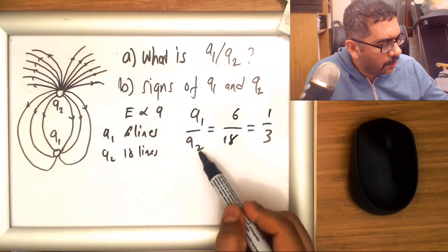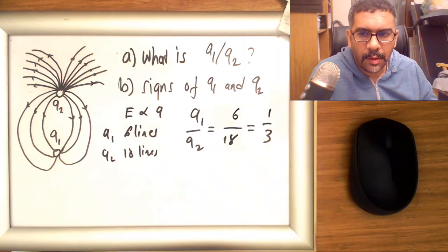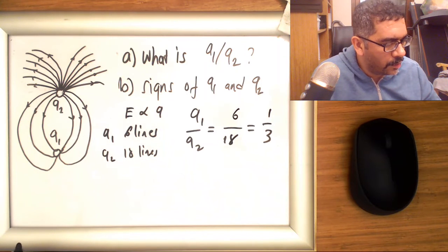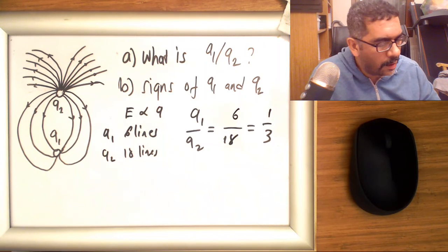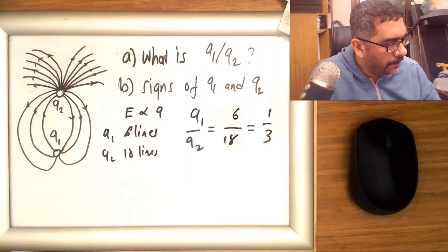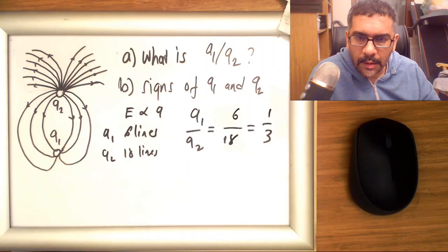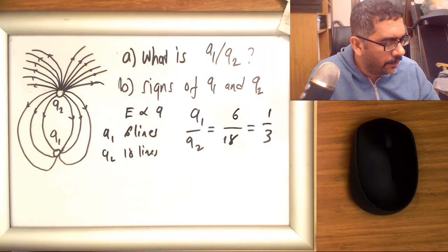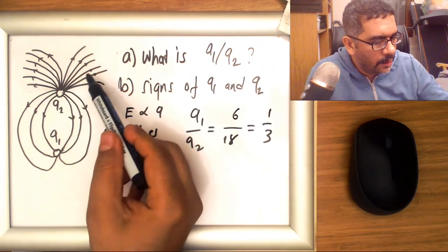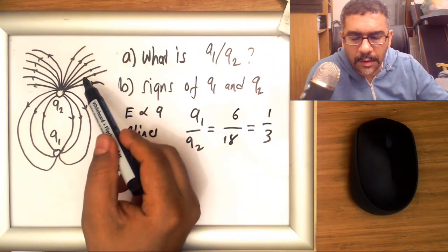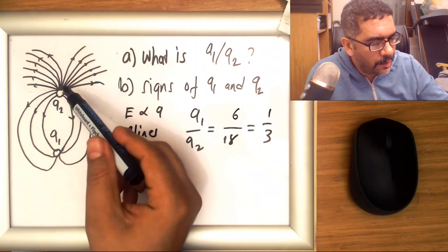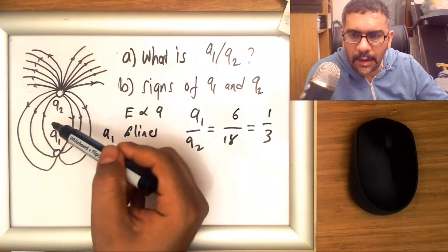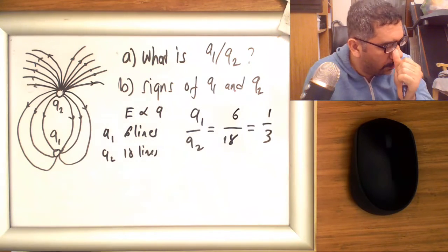divided by the magnitude of charge q2 is just one over three. So q2 is three times the charge of q1. But we're not talking about the signs yet, because what determines signs are not the number of field lines, but rather the direction of the field lines. So what you see in the picture are these arrowed lines, because the electric field is a vector and we need...